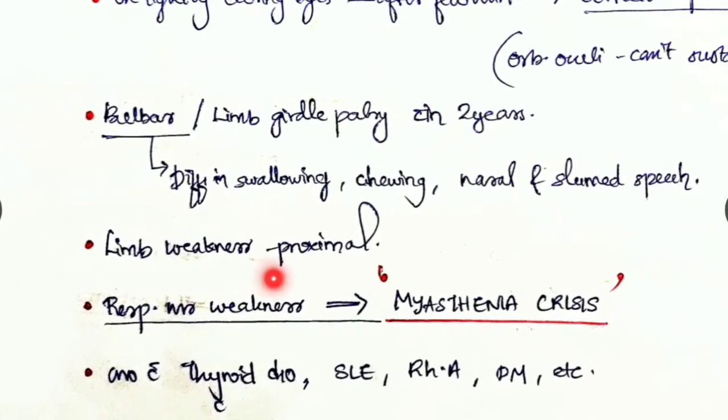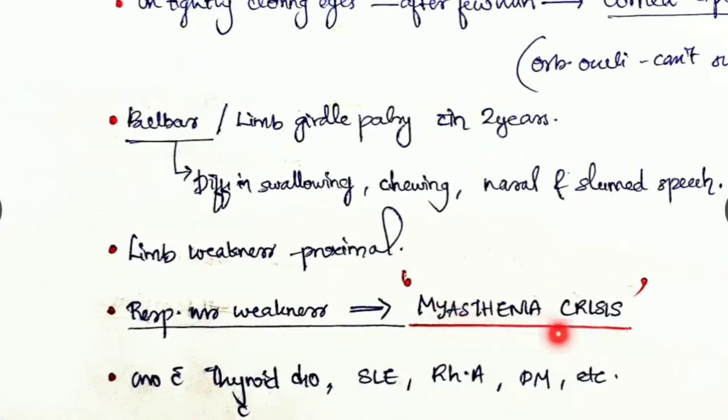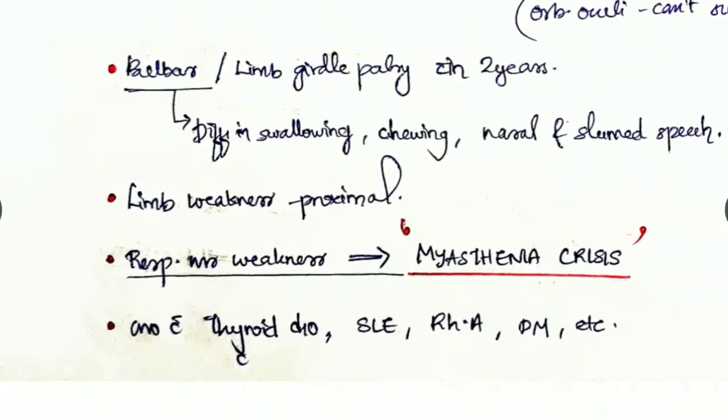As the disease progresses there is proximal limb weakness. Towards the end there can be respiratory muscle weakness, which we call myasthenic crisis. Since this is an autoimmune condition, it may be associated with other autoimmune diseases like thyroid disorders, SLE, rheumatoid arthritis, or diabetes mellitus.